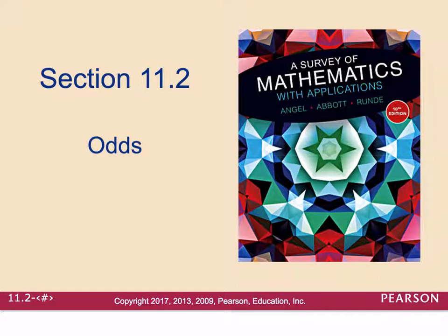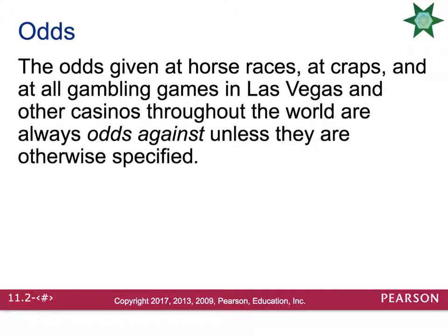Section 11.2 is about odds. The odds given at a horse race, at craps, and at all gambling games in Las Vegas and other casinos throughout the world are always the odds against, unless they are specified otherwise.